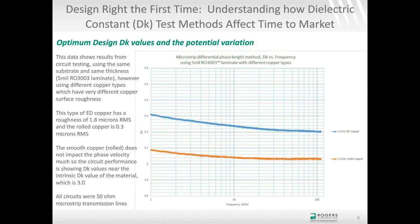Using 5 mil RO3003 with two different coppers illustrates this further: rolled copper (orange curve, ~0.35 microns RMS) is very close to the intrinsic dielectric constant of 3.0 even at thin dimensions, because smooth copper doesn't slow the wave. The ED copper (blue curve, ~2.0 microns RMS) shows a higher effective dielectric constant because the rougher copper slows the wave. A slower wave means higher dielectric constant — that's the core relationship.